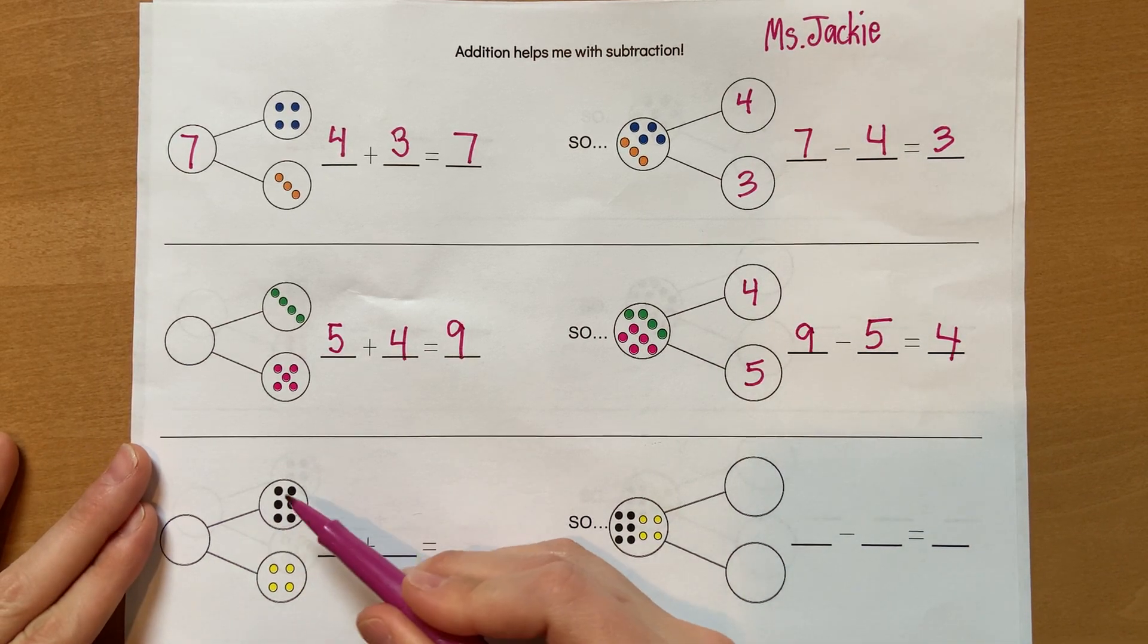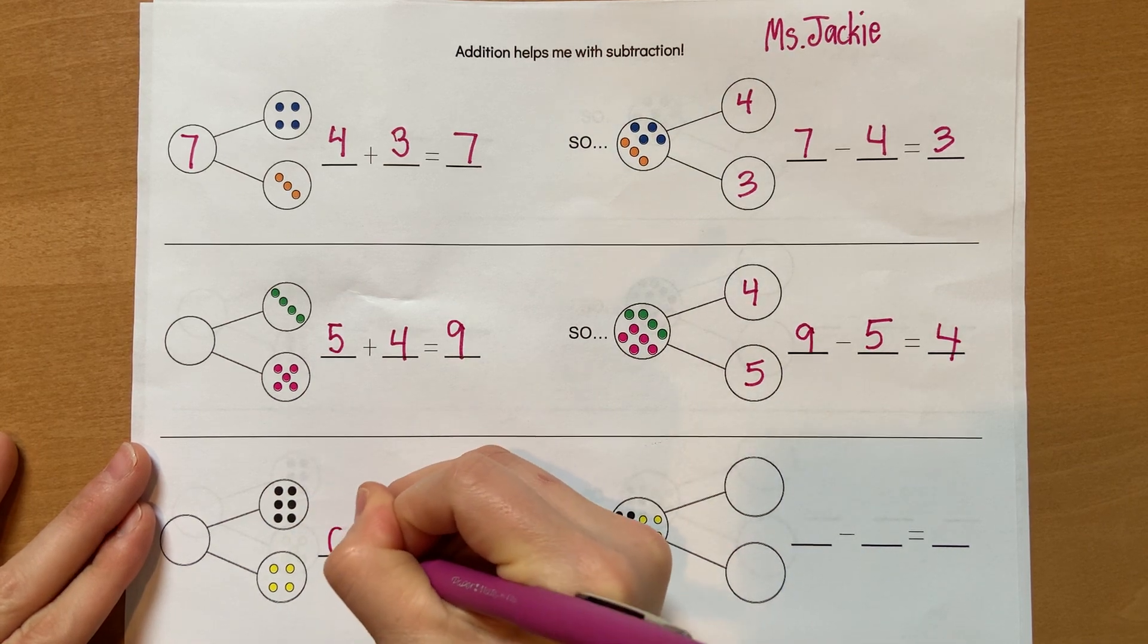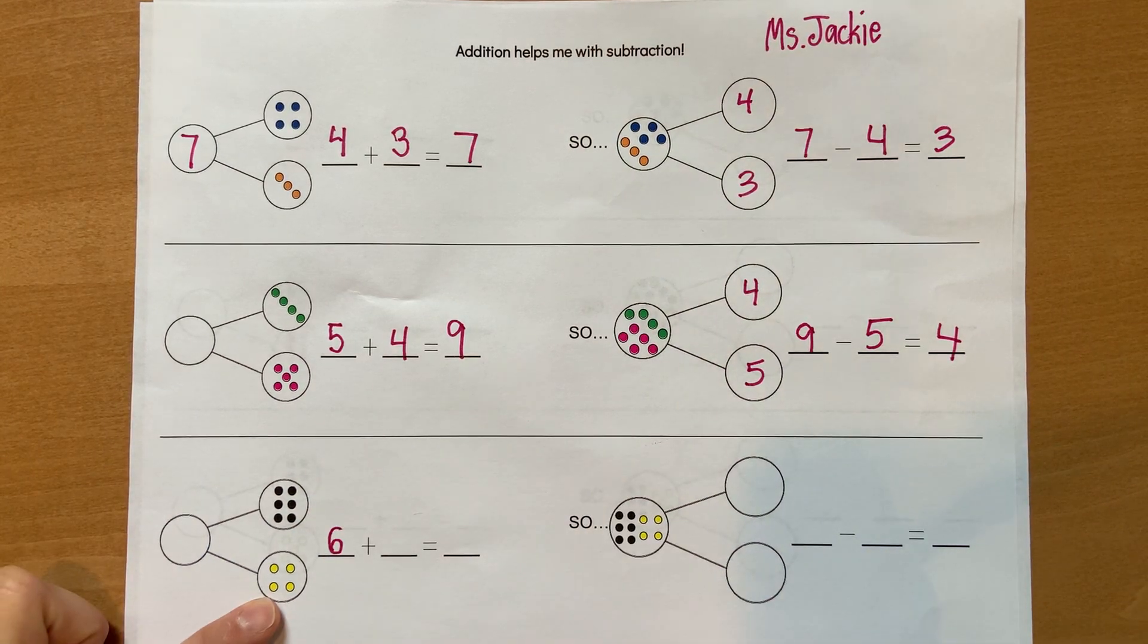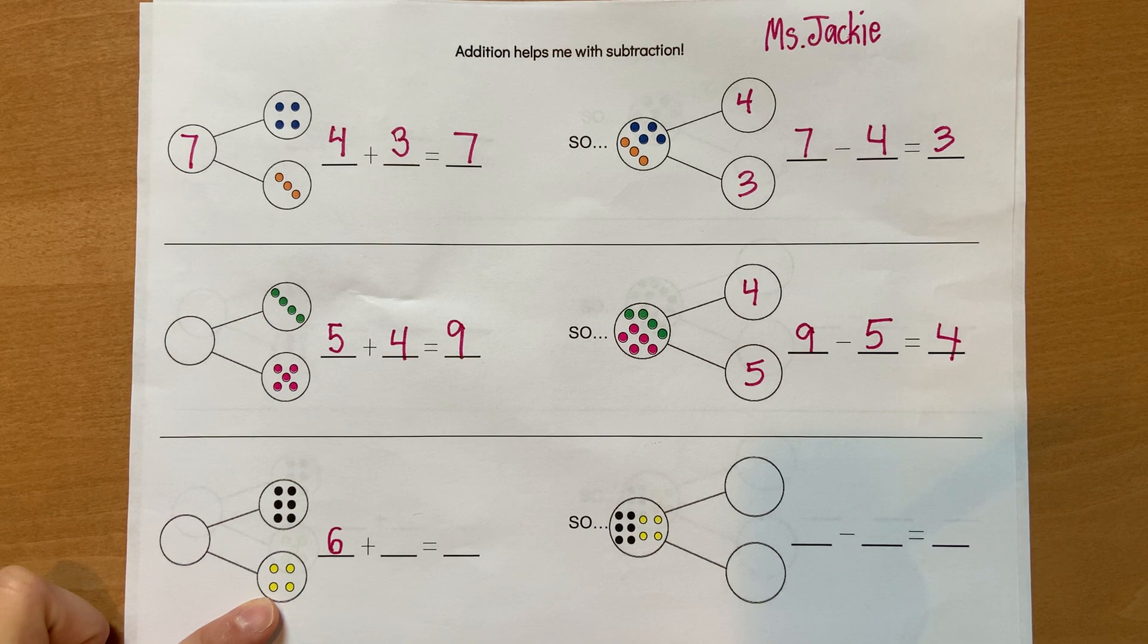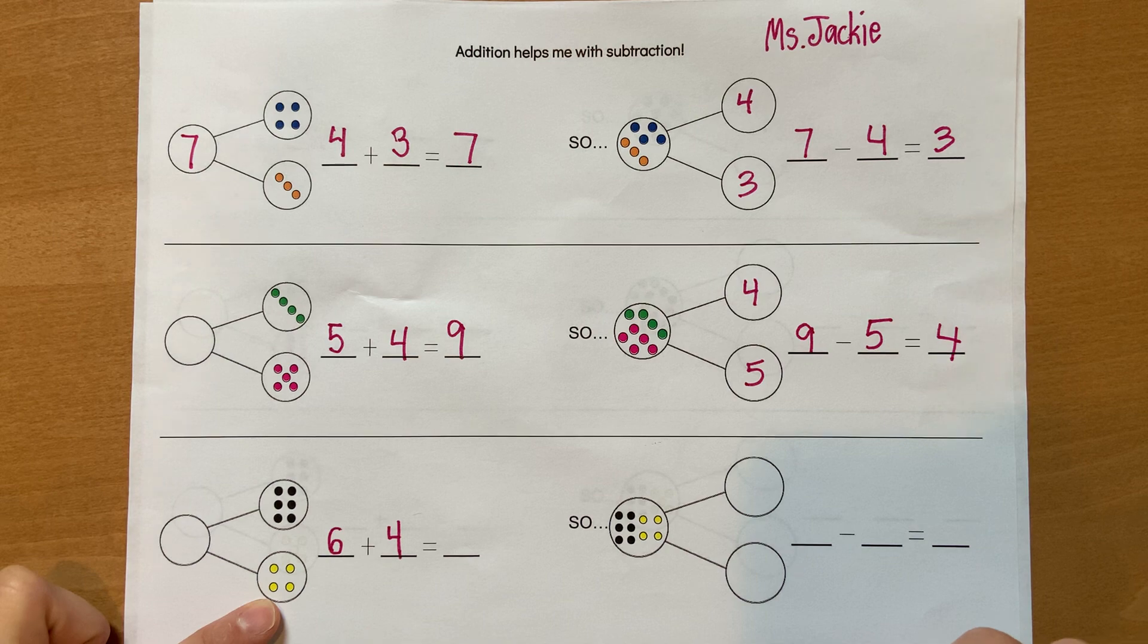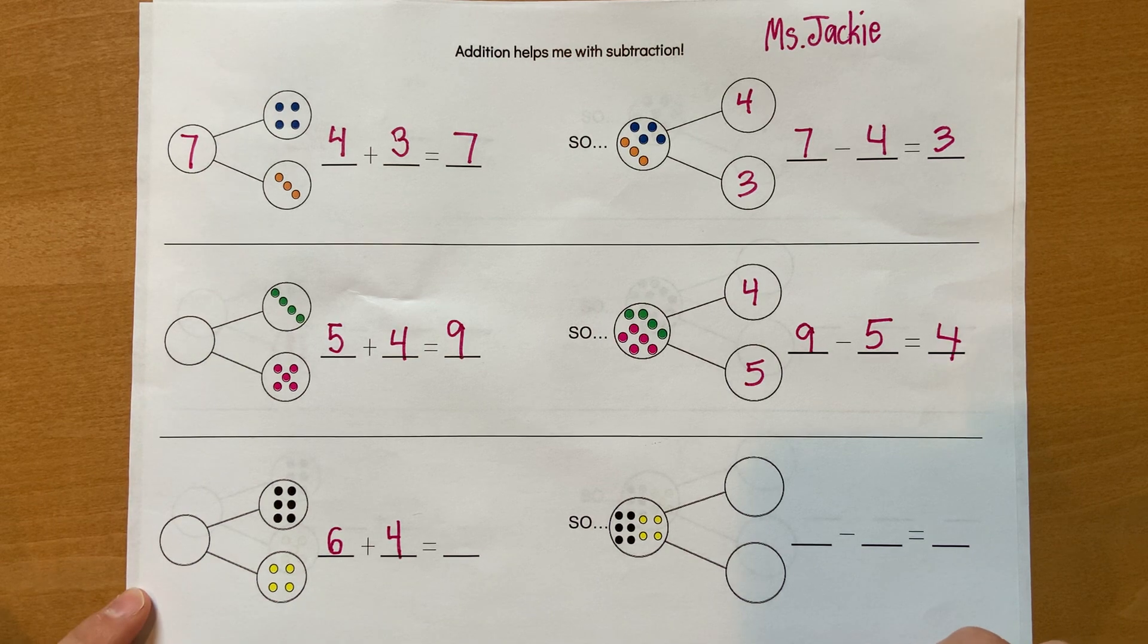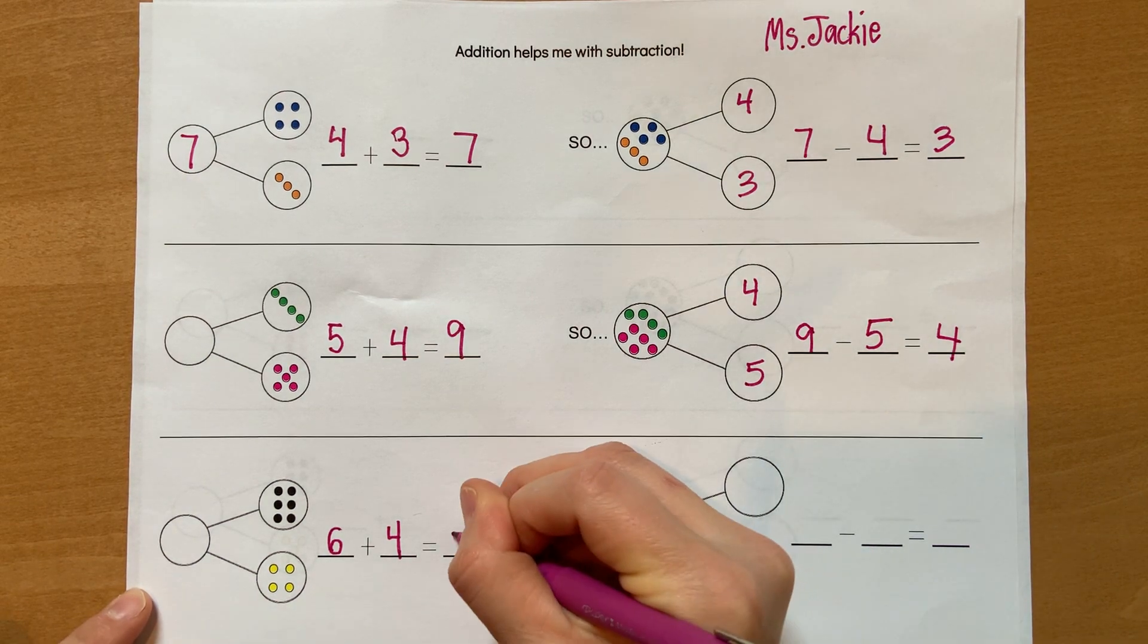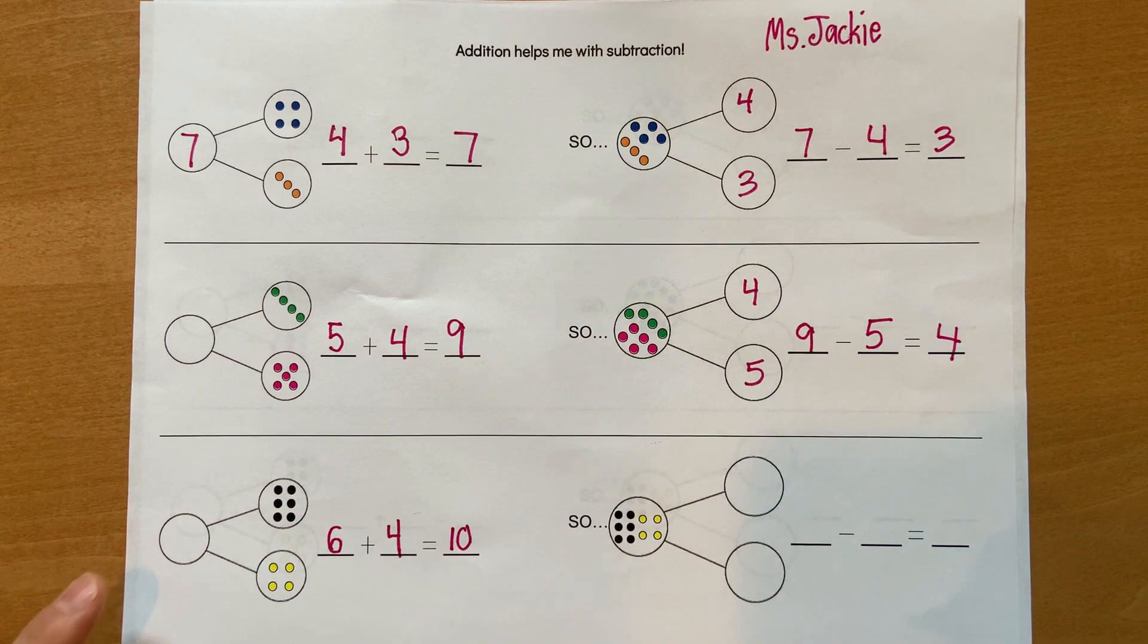How many are in this circle? Six. Good. And how many are in this circle? Four. Very good. And maybe you know this fact. Six plus four makes ten.